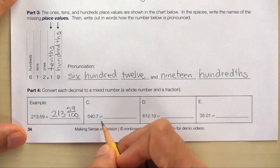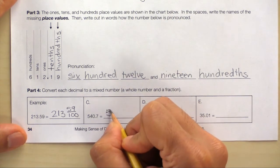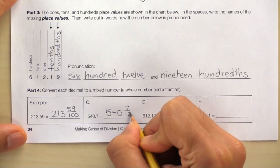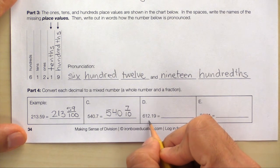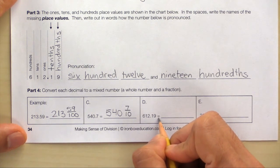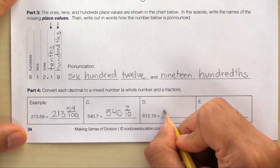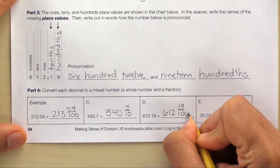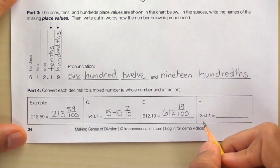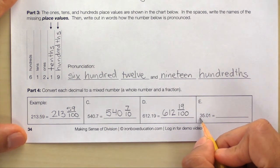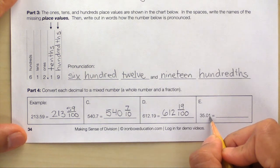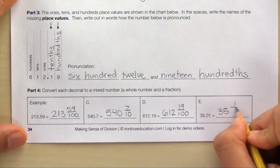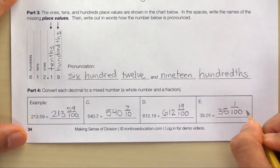Here's letter C. 540 and 7 tenths. Letter D. 612 and 19 hundredths. Finally, letter E. 35 and 1 hundredths.